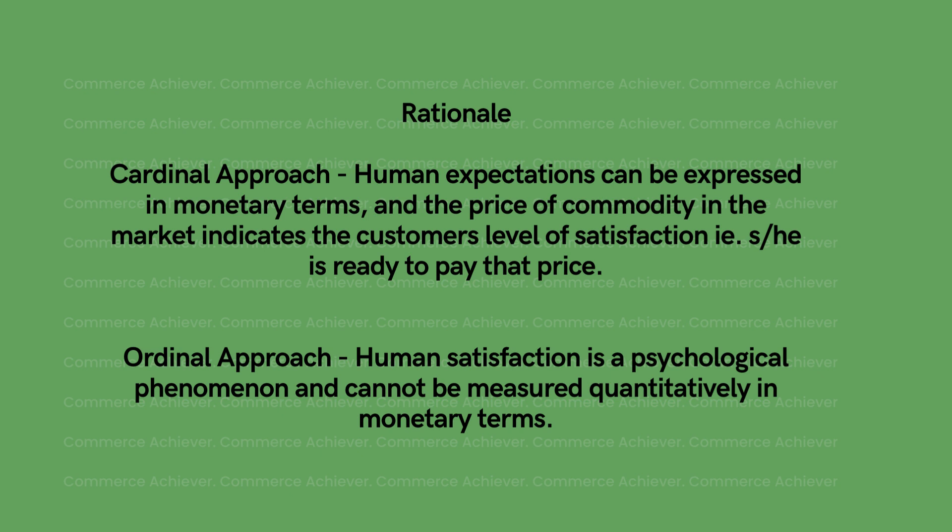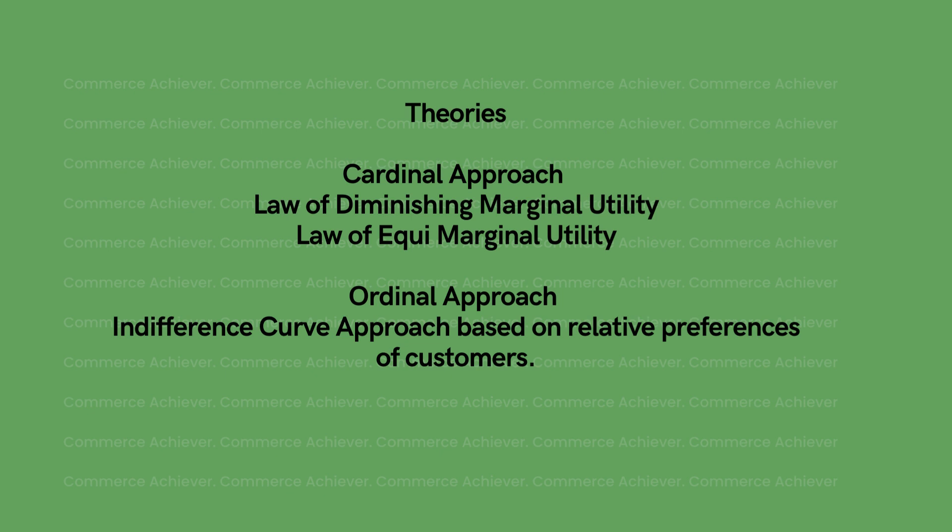Both approaches work on reverse psychology, so to speak. In the Cardinal Approach, there are two major theories: the Law of Diminishing Marginal Utility and the Law of Equi-Marginal Utility. These are marginal utility theories where we can quantify satisfaction. In the Ordinal Approach, there is the Indifference Curve approach, which focuses on consumers' preferences and cannot be quantified.